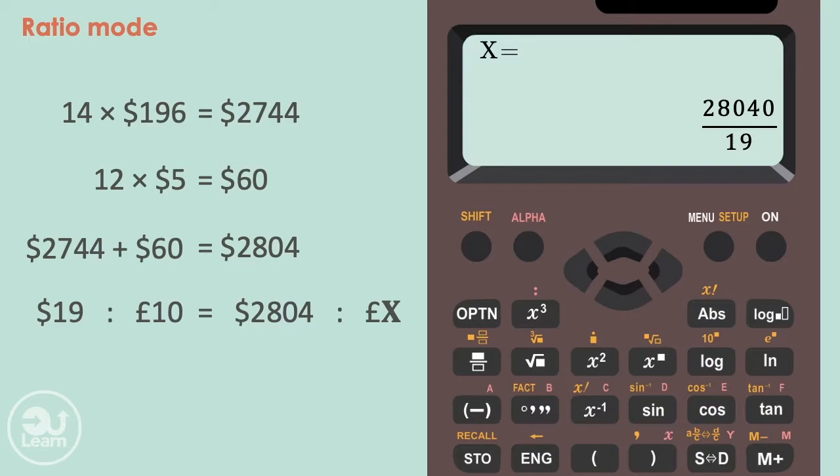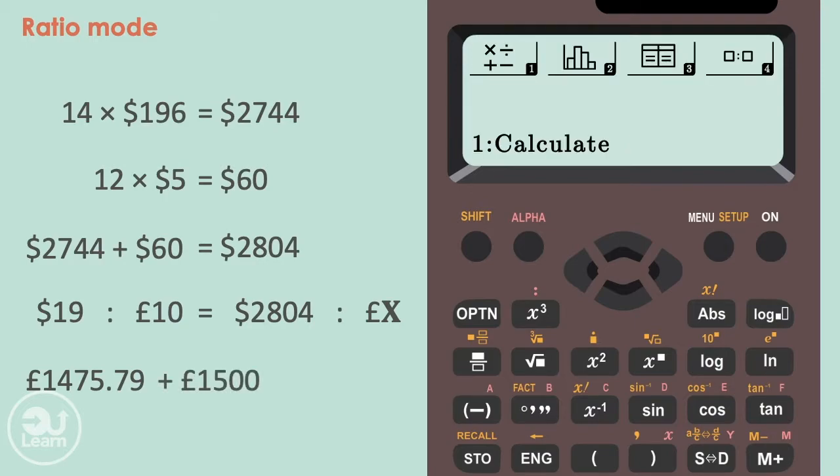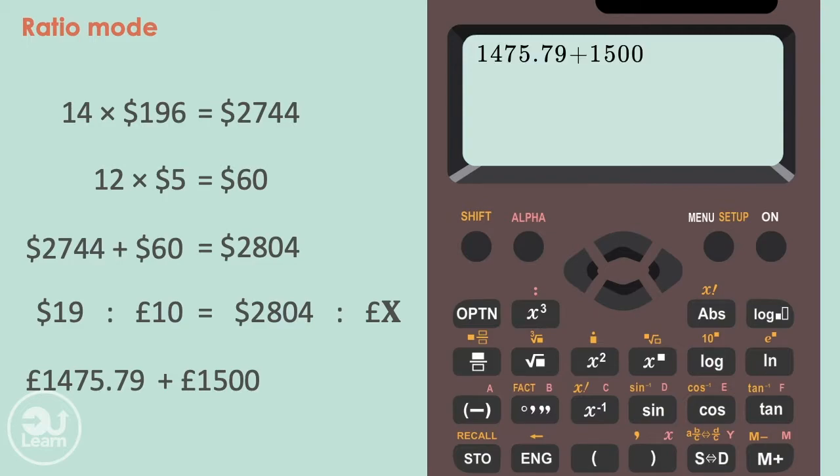The amount in pounds is as a fraction, which is 28,040 over 19. And then we press SD to give our value as a decimal. Because we're dealing with money, we round our amount to two decimal places. Our final step is to add our £1,500 to our new amount. We press menu, followed by 1 to get back to calculate mode. And add £1,500 to our value, which comes up to £2,975.79.